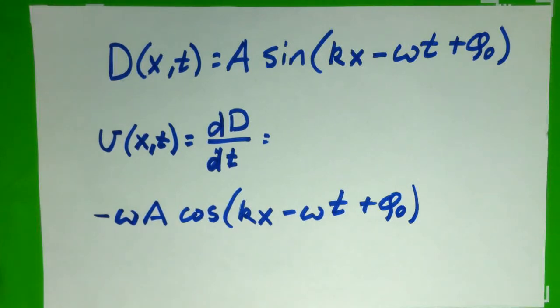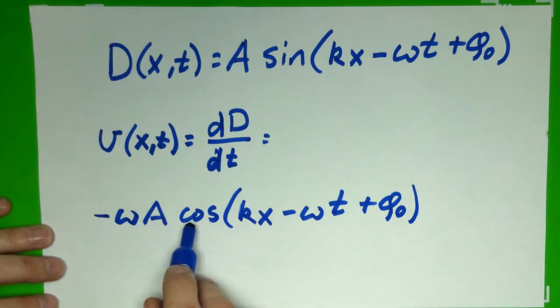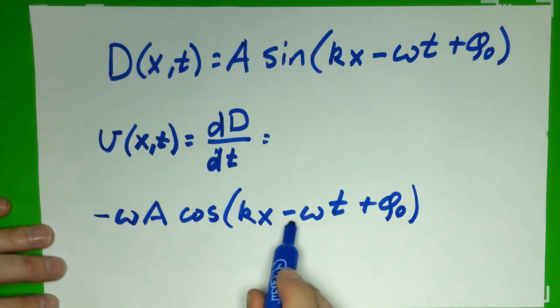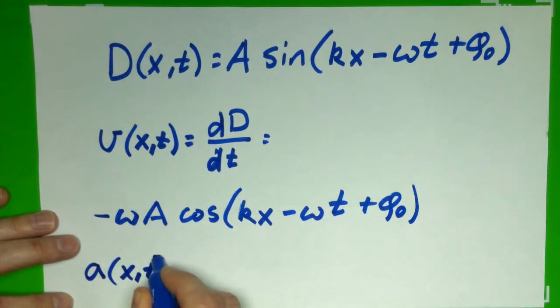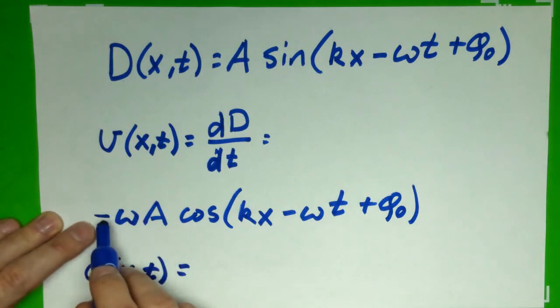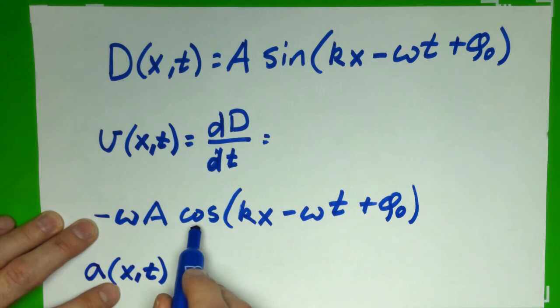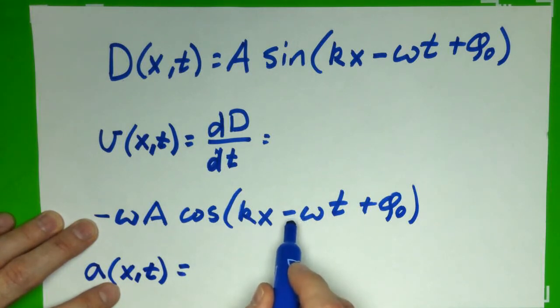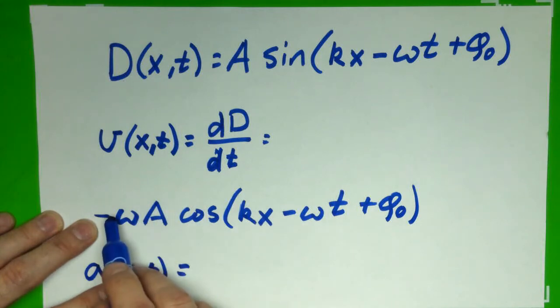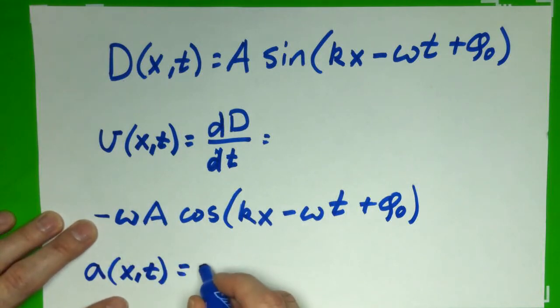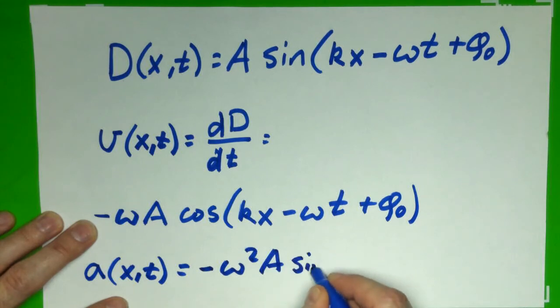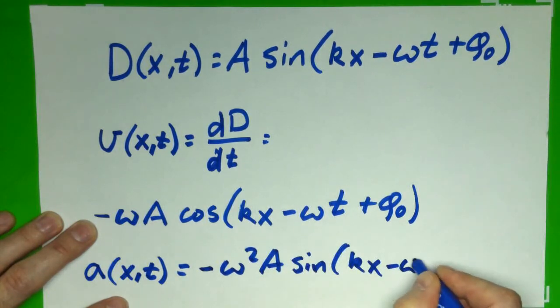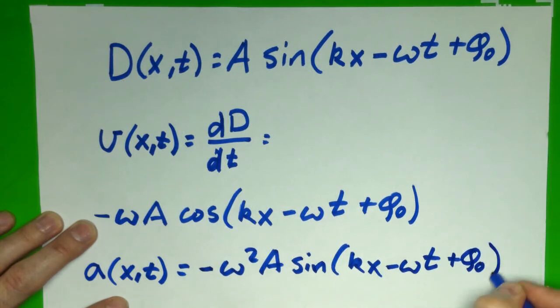Now we could actually take this one step further and take another derivative of this to get our acceleration. Which if we do, we'd get the derivative of cosine, which is negative sine. But then we'd get a minus ω again. So we have an acceleration as a function of position and time. We start with a minus sign, we get a minus sign from taking the derivative of cosine, and then we get another minus sign from the chain rule. Leaving us with an overall minus sign. We have three minus signs. So we have negative, and now we have two factors of ω. Another ω comes out. A sine(kx - ωt + φ₀). So that's our acceleration.